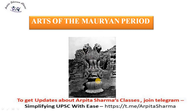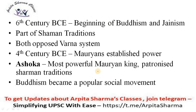Now let's begin with the topic: The Arts of the Mauryan Period. Before this, we have seen Indus Valley Art with some sculptures and architecture remains. In this lecture, we will see what Mauryan period remains exist. Beginning with the 6th century BCE, that was the time of the beginning of Buddhism and Jainism. In the 6th century BCE, Buddhism and Jainism were on a rise. These religions were emerging and were part of Shramana traditions.